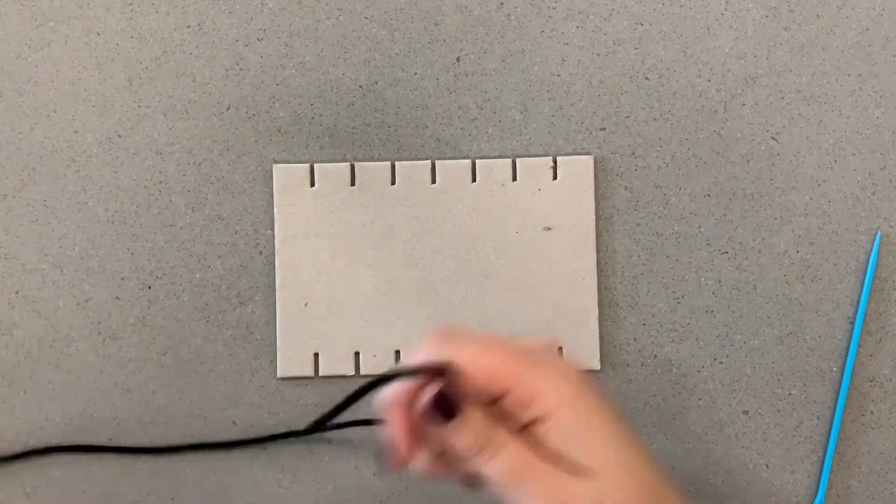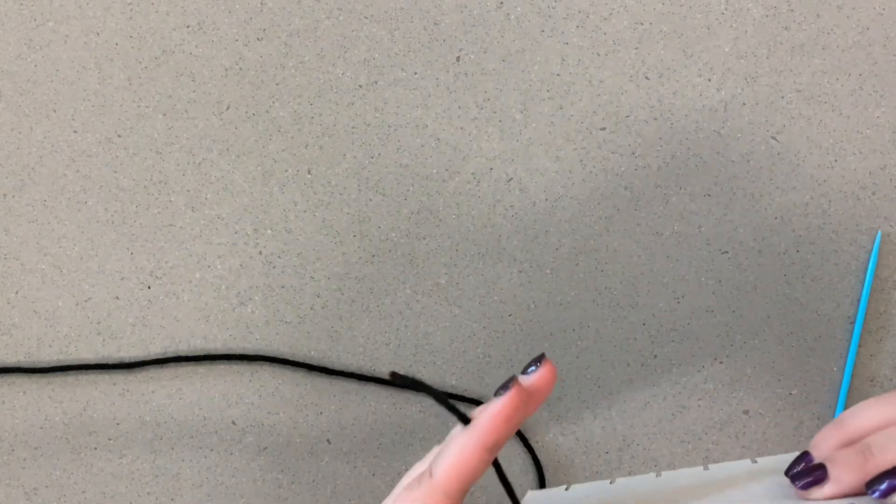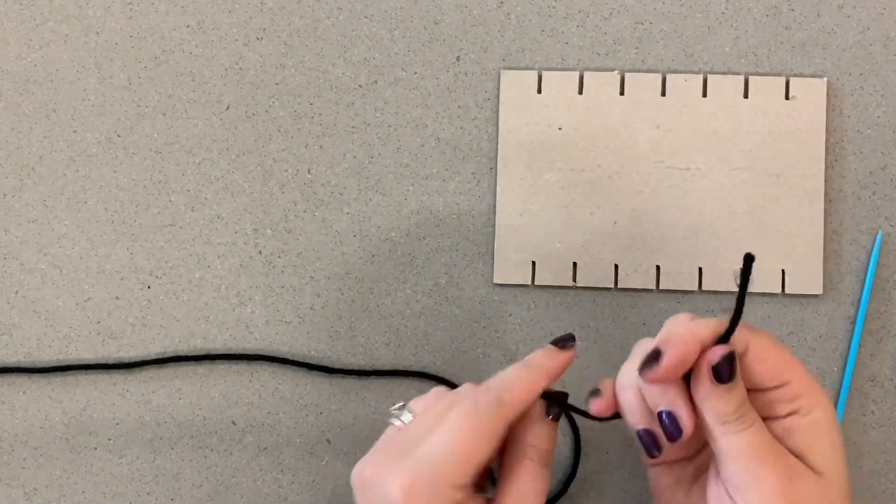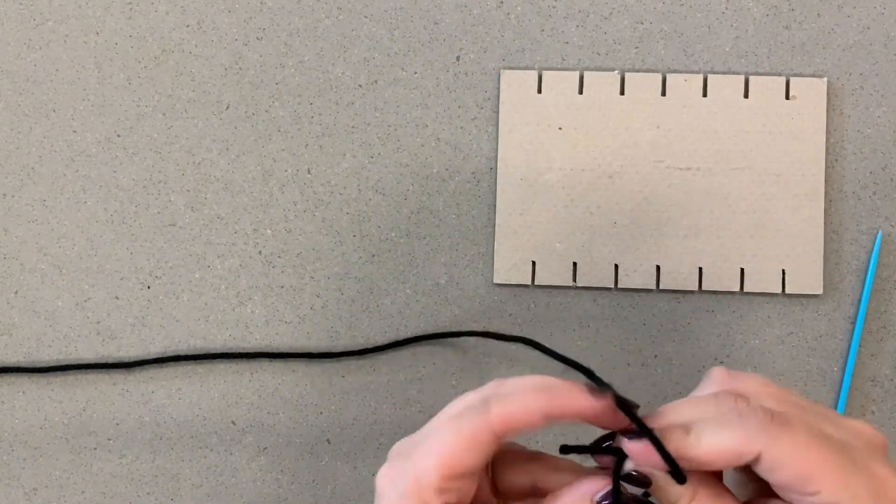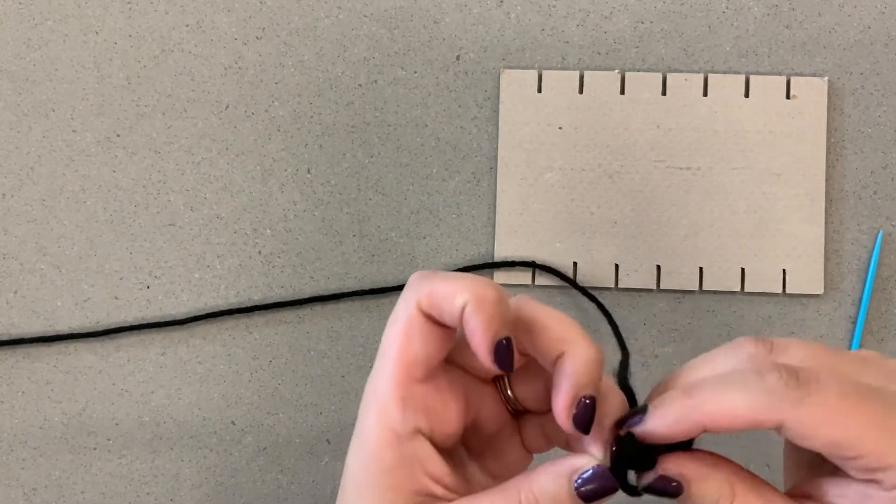For our weaving, this piece of cardboard is going to be referred to as our loom. So you are going to take a string and you're going to double knot it so that the knot is kind of thick. And then we will wedge that into one of those slots.